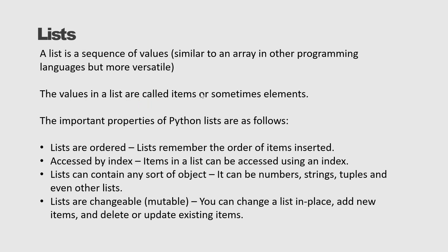A list is a sequence of values similar to an array in another programming language, but more versatile. The values in a list are called items or elements. Lists are ordered — they remember the order of items inserted. You can access list elements by index: 0, 1, 2, and so on. Lists can contain any sort of objects: numbers, strings, tuples, and even other lists. Lists are mutable — meaning you can change them.